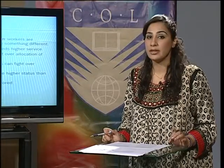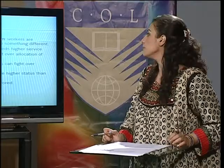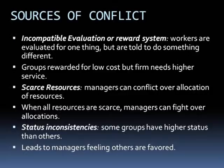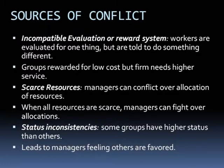There are some other important sources of conflict. Incompatible evaluation or reward systems: workers are evaluated for one thing but are told to do something different, or groups are rewarded for low cost but the firm needs higher service. Scarce resources: managers can conflict over the allocation of resources — when all resources are scarce, managers can fight over allocations.